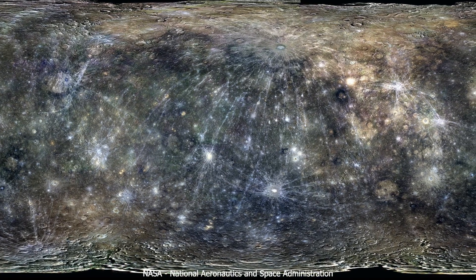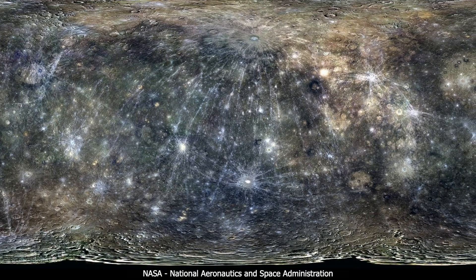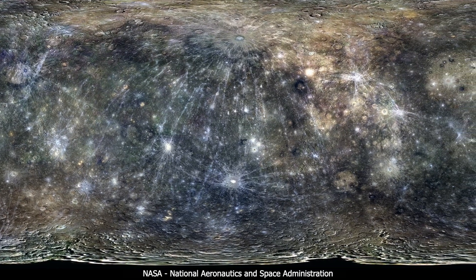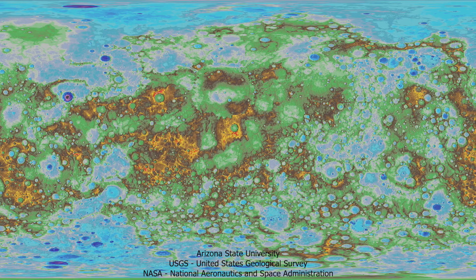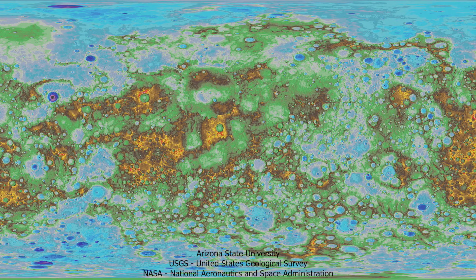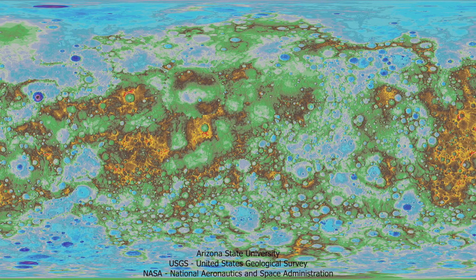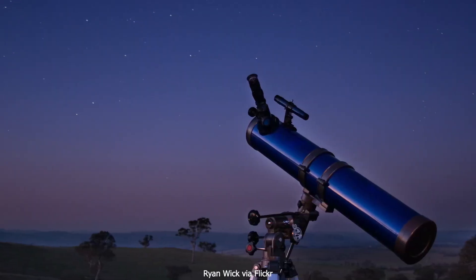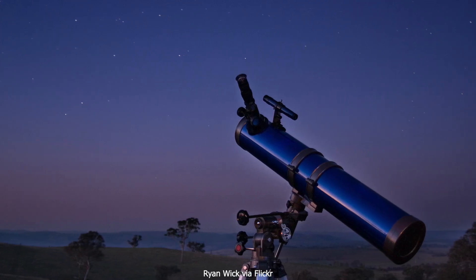Two years into the mission, it completed this stunning map of the entire surface. Messenger was not the first probe to reach Mercury, and it won't be the last. There is a reason we can't study this place with just Earth-based telescopes.